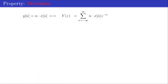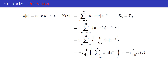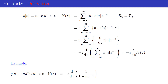The z-transform of the sequence n·x[n] can be found via the differentiation property: pre-multiplying by z, rewriting the result as a differentiation, and taking the derivative outside the summation by linearity leads to the final result. The region of convergence is not influenced. This derivative property is demonstrated with the sequence y[n] = n·a^n·u[n].